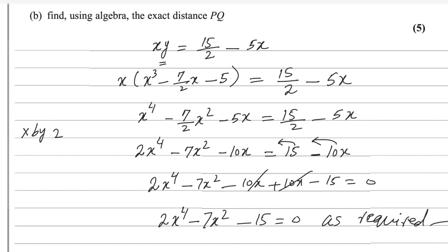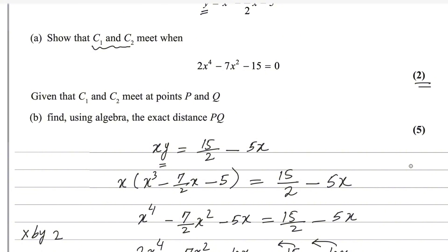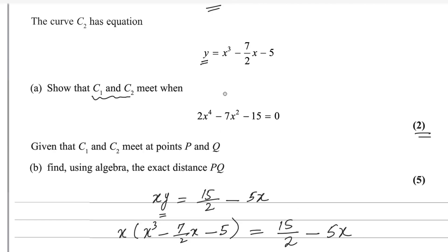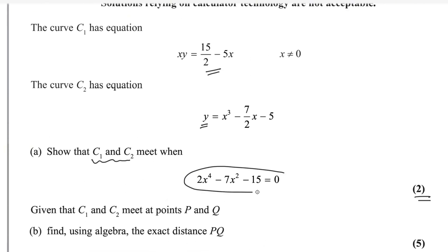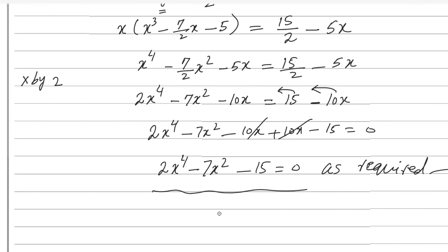First part is done. Given that C1 and C2 meet at points P and Q, if we solve this equation we will get the X coordinates of P and Q. Substituting those X values back gives the Y coordinates as well, giving us both points. We just need to solve this equation to get P and Q. Let me show you how to solve it now.